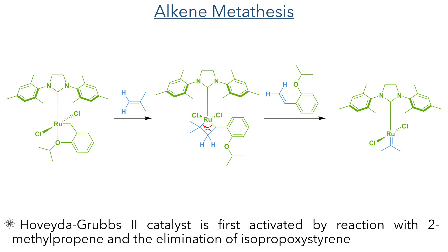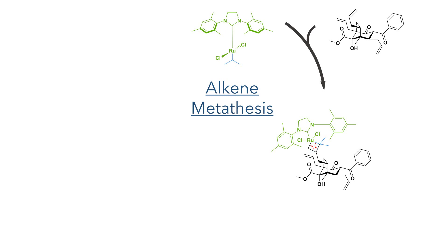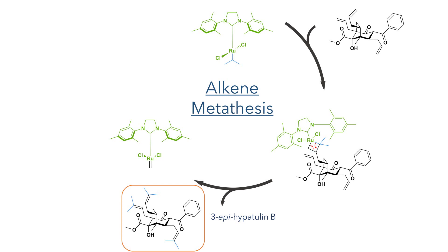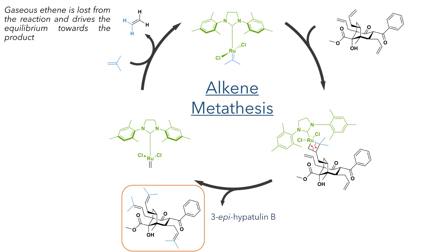With the ester now installed, they then turned to installing the prenyl groups to complete the synthesis. This was done using olefin metathesis with Hoveyda-Grubbs second generation catalyst. This catalyst first undergoes activation by a reaction with 2-methylpropene. This reacts with a carbene bonded to the metal centre and forms a cyclic four-membered intermediate. This fragments and eliminates the isopropoxystyrene ligand, producing a propene carbene bonded to the ruthenium centre. It is this carbene that then reacts with the substrate, forming a four-membered cyclic intermediate which then fragments and completes the metathesis, producing the target 3-epi-hypatulin B with all three prenyl groups now installed. The catalyst is once again regenerated by a reaction with 2-methylpropene. The product of this reaction is ethene, which is a volatile gas and is lost from the reaction mixture, driving the reaction forward.